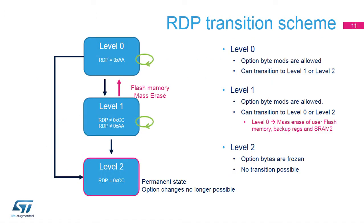Let's look at the transitions possible between each readout protection level. STM32-WB MCUs have three RDP levels. Level 0 means there is no memory protection, and option bytes can be modified. From Level 0, the device can move to Level 1 or Level 2. Level 1 ensures memory protection while keeping debug access enabled. From Level 1, the device can move to Level 0 or Level 2. Regression to Level 0 will cause a flash memory mass erase. Level 2 ensures the same memory protection as Level 1 but completely disables JTAG SWD debug access.